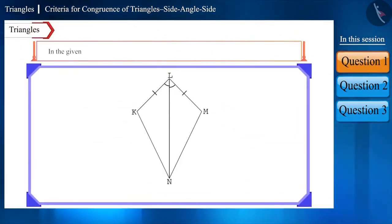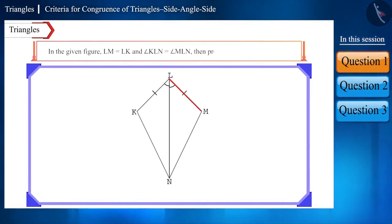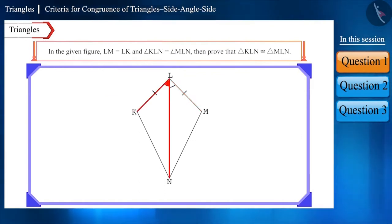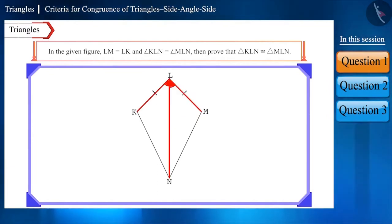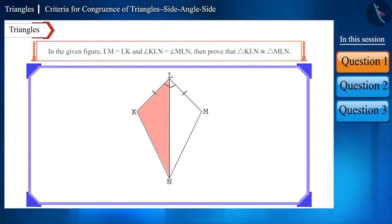In the given figure, side LM is equal to side LK and angle KLN is equal to angle MLN. Prove that triangle KLN is congruent to triangle MLN.